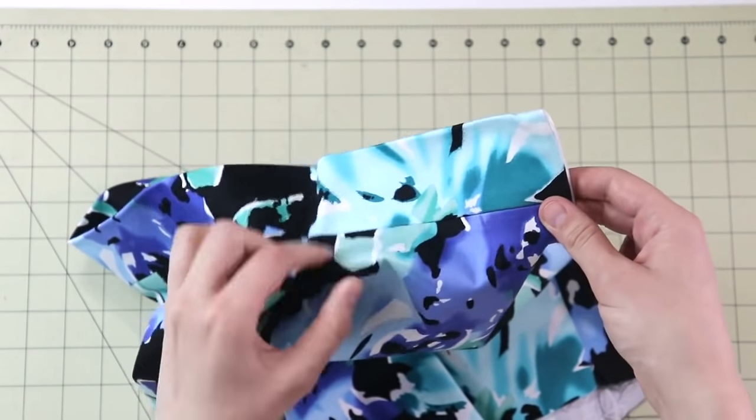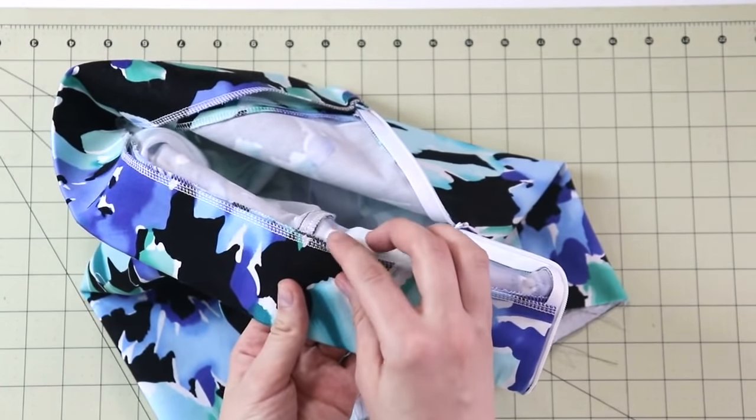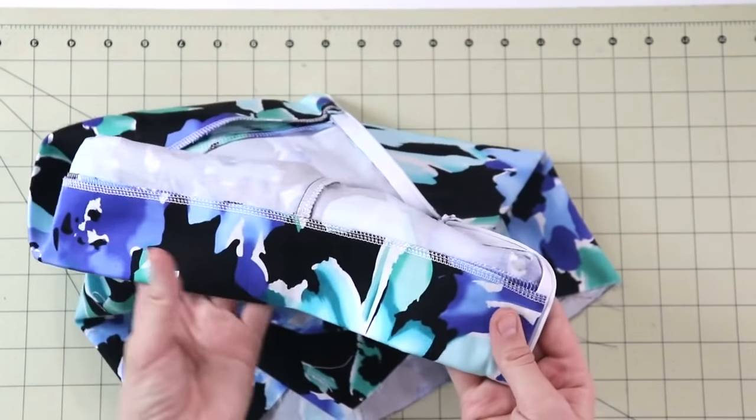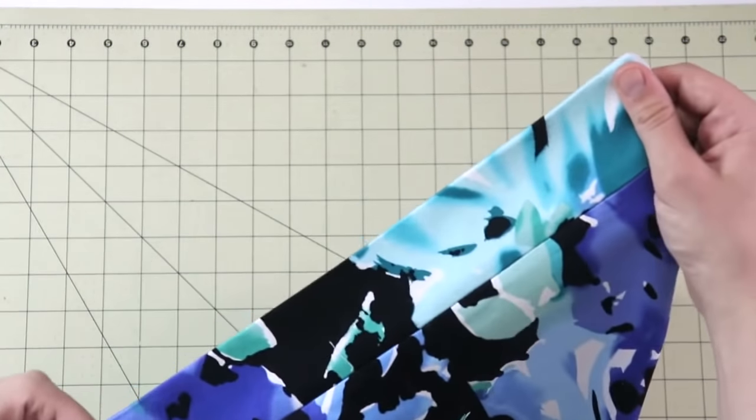And that way I will get no visible seam on the outside of the skirt, but I will get a very nicely done waistband on the inside of the skirt.